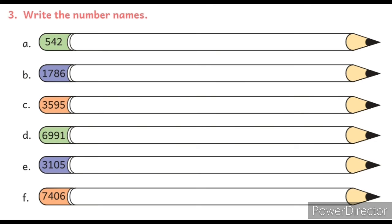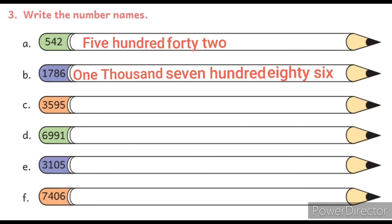Question No. 3: Write the number names. Question No. 3 में हमें कुछ numbers दिये गये हैं, जिनके हमें number names write करने हैं. So, Solution No. 3A: 542 and B: 1786.